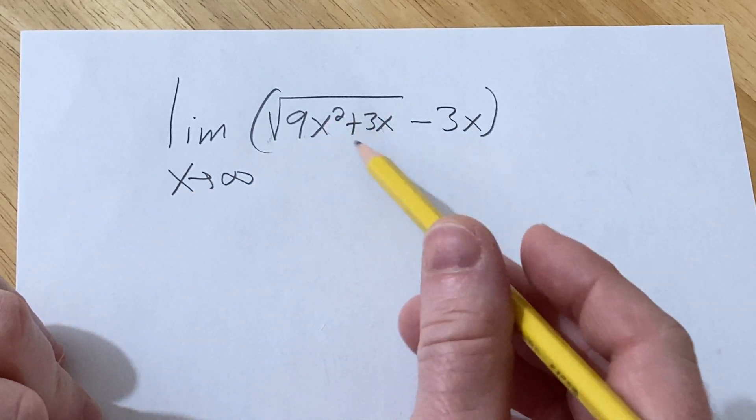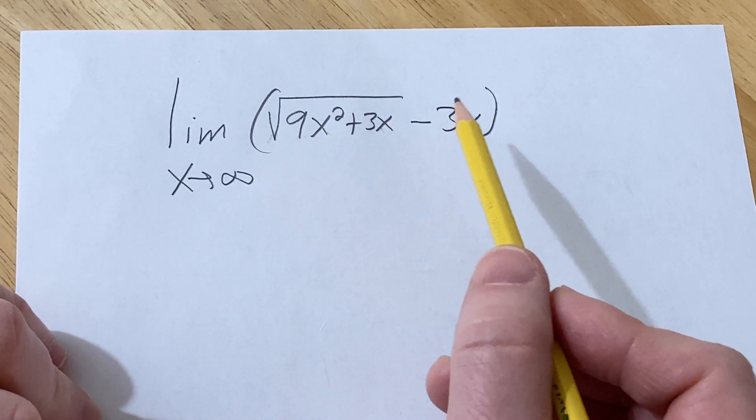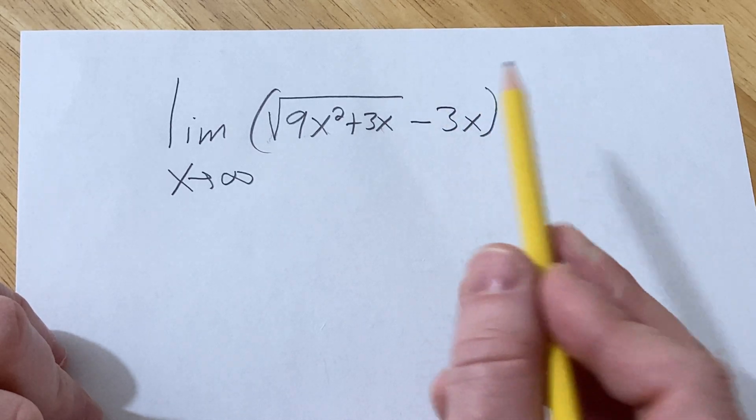So to do a problem like this, because we have a minus sign and we have a radical here, typically one good approach is to rationalize.